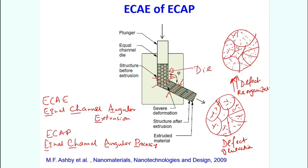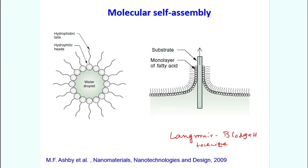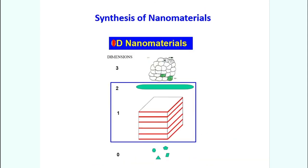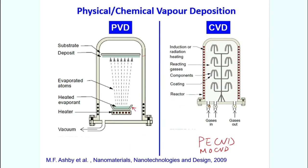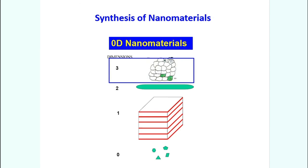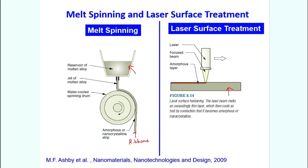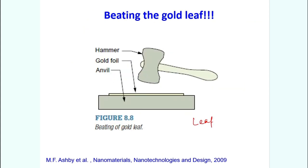I will stop here. To summarize: I started with zero-dimension nanomaterials — inert gas condensation from the last lecture, and today sonochemical techniques, sol-gel, and molecular self-assembly including Langmuir-Blodgett. Then I discussed 1D and 2D nanomaterials via electrodeposition, PVD, and CVD. Finally I discussed 3D bulk nanomaterials via liquid routes like melt spinning, laser surface treatments, and deformation routes like ECAE. We will continue these topics in the next lecture before moving on to properties of nanomaterials.